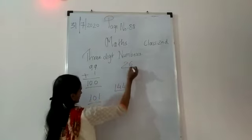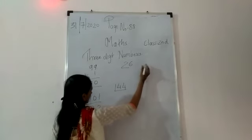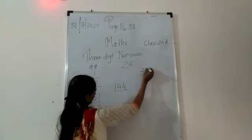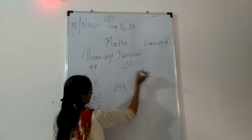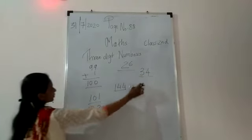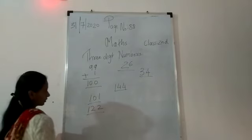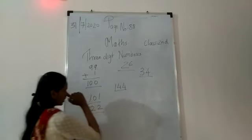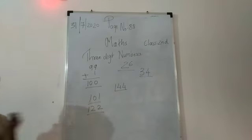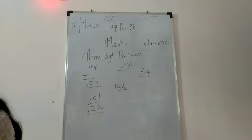And 26, 34 — these are all 2-digit numbers. So today we are going to see the 3-digit number.